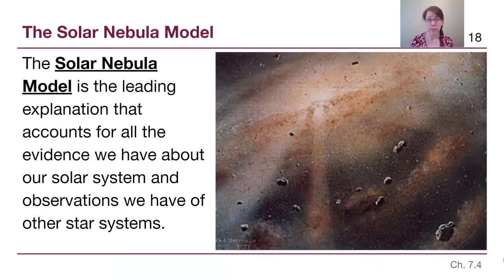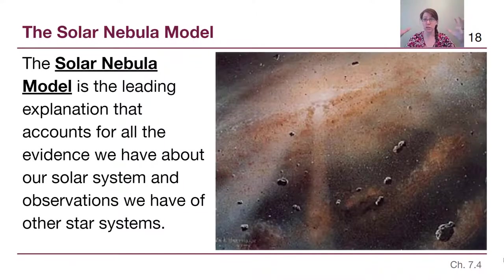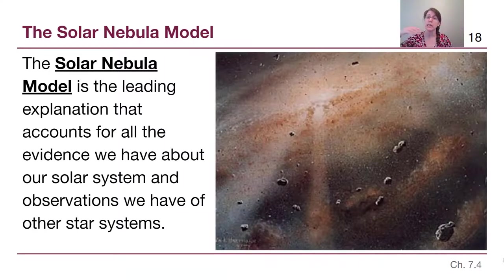The solar nebula model is the current leading explanation that accounts for all of that evidence, as well as observations of other star systems. The big picture idea is that the word 'nebula' describes a cloud of gas and dust, and the solar nebula model says our entire system came from a large cloud of gas and dust that collapsed — in the same way we've already talked about star formation, planets can also form during this process.